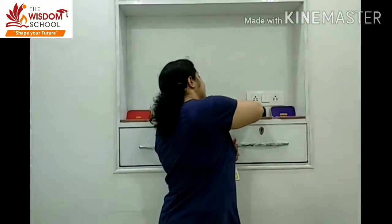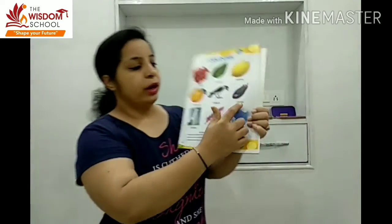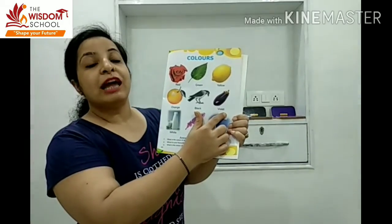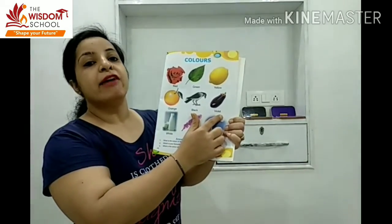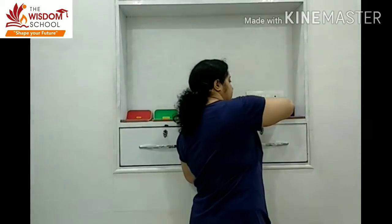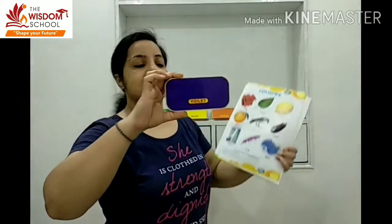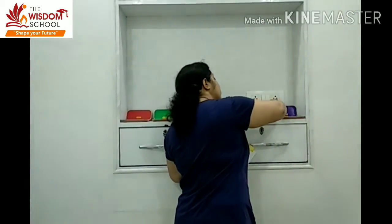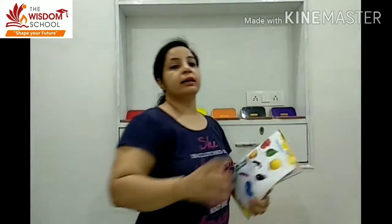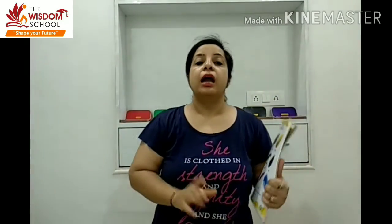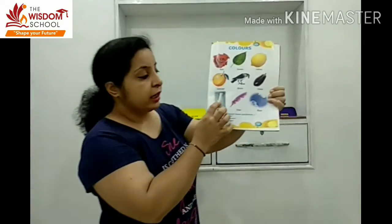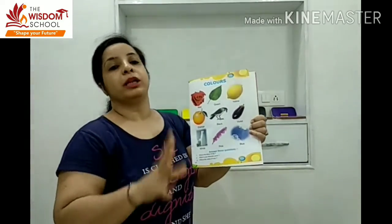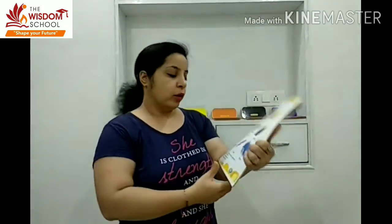Next is violet. Violet color. Look here. You can see brinjal — the color we have already learned, but now we are doing revision. Next are three new colors. I will teach you these three colors. Clear? Okay, now look here.